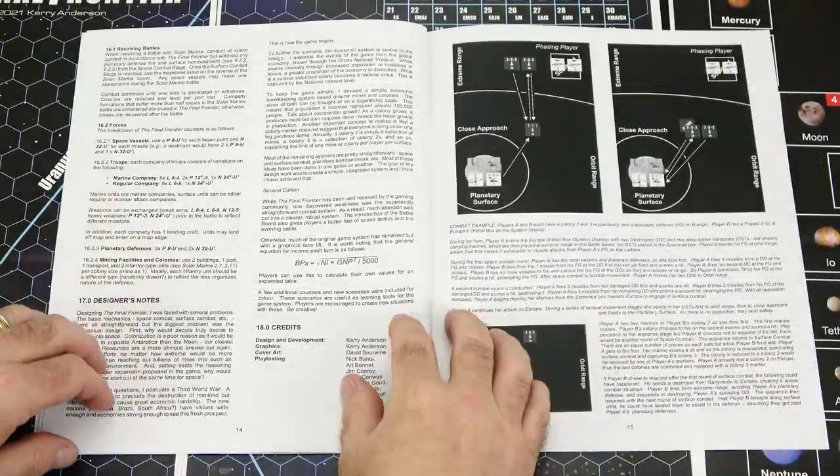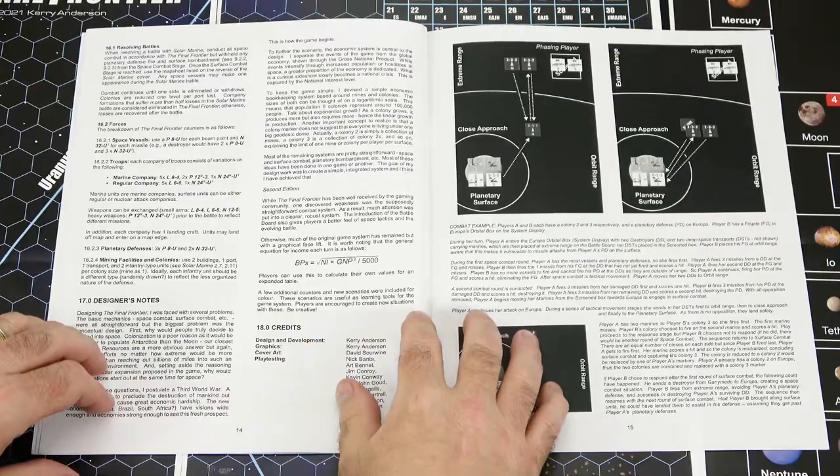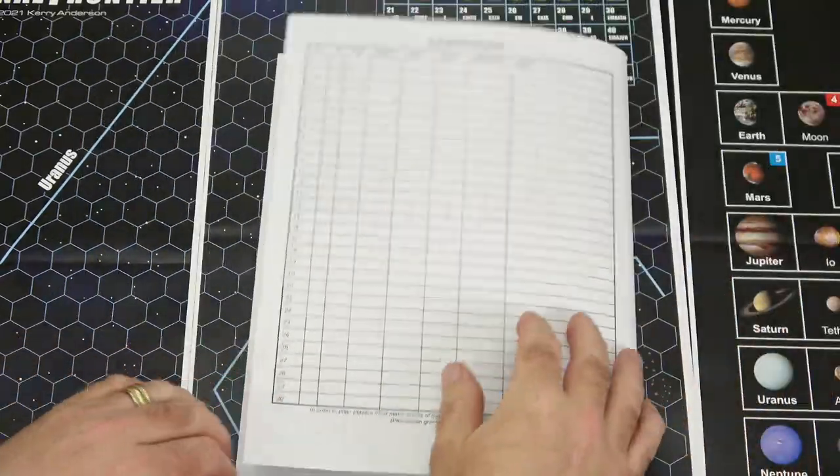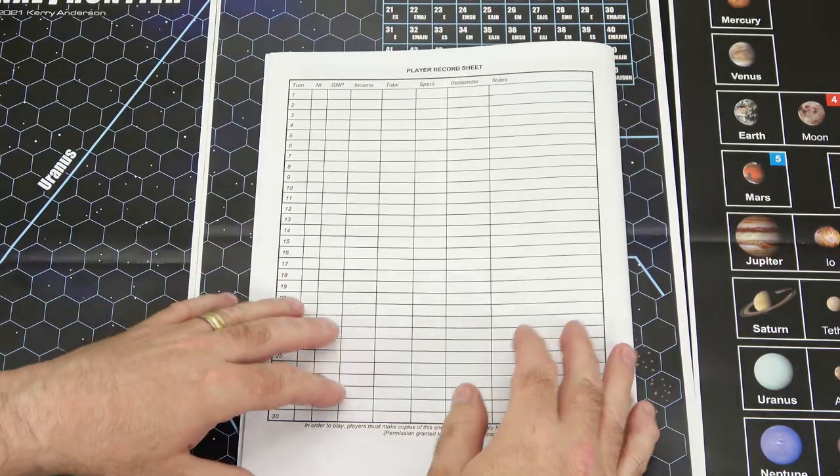Then you have the linked game. If you want to take your Final Frontier and use it with Solar Marine, then we have the designer's notes and the credits. And then we have a combat example on page 15. That was something that we did not have in the other book.